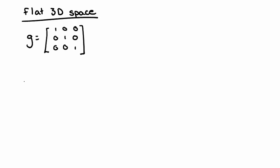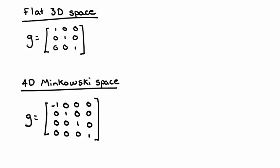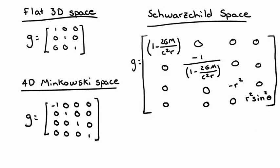Finally, let's wrap this lesson up with a few exercises. We'll look at three different metrics that exist in three different spaces. In flat 3D space in Cartesian coordinates, the metric is the 3x3 identity matrix. In 4D Minkowski space, again in Cartesian coordinates, we use a metric with negative 1, 1, 1, 1 down the diagonal and zeros everywhere else. And in Schwarzschild space, using spherical polar coordinates, we have the following metric.